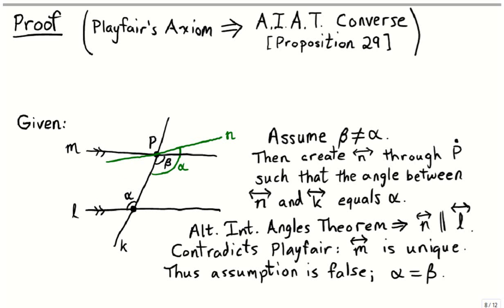However, Playfair's axiom, which we're assuming, states that there is exactly one parallel line to L through this point P. Therefore, this line N cannot exist, which means that our original assumption — that angles alpha and beta were different — must be false. So the original angles alpha and beta were equal, and this is the conclusion of the alternate interior angle theorem converse.